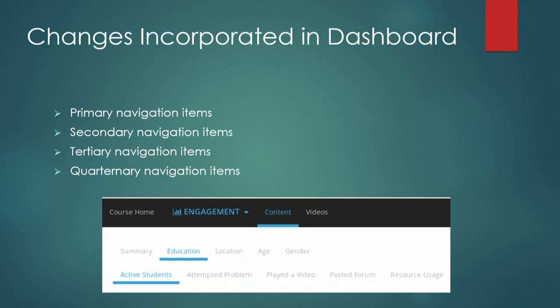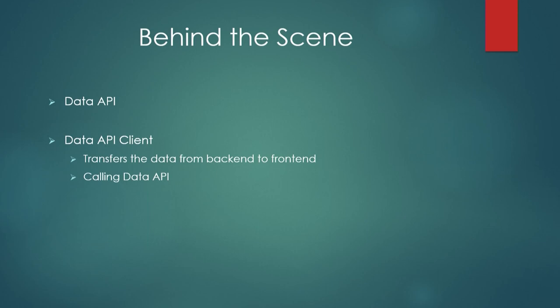Originally, the engagement content section had only a summary view of activities. We broke the content down into gender, age, education, and location — referred to as tertiary navigation items under the secondary navigation item 'Content.' For each tertiary navigation item, there are five quaternary navigation items: active students, played a video, attempted a problem, posted forum, and resource usage.